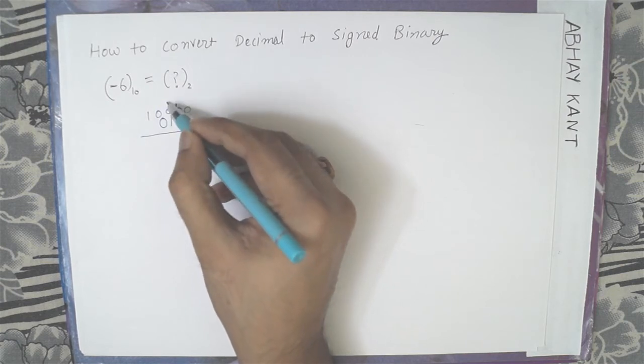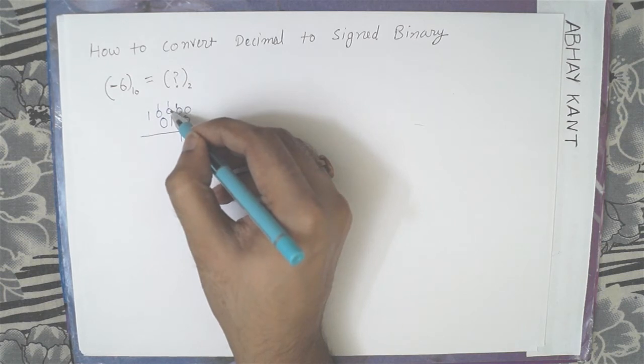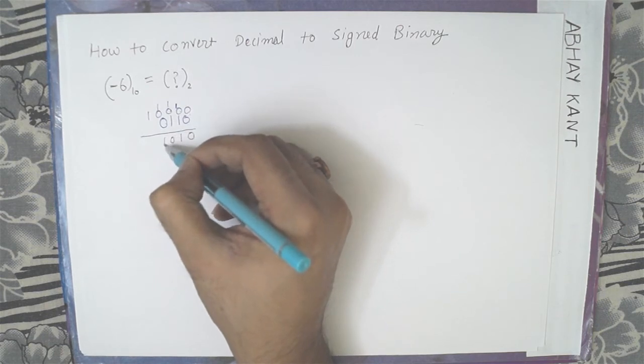2, 1. These all become 1. Then we have 1 minus 1 is 0, 1 minus 0 is 1.